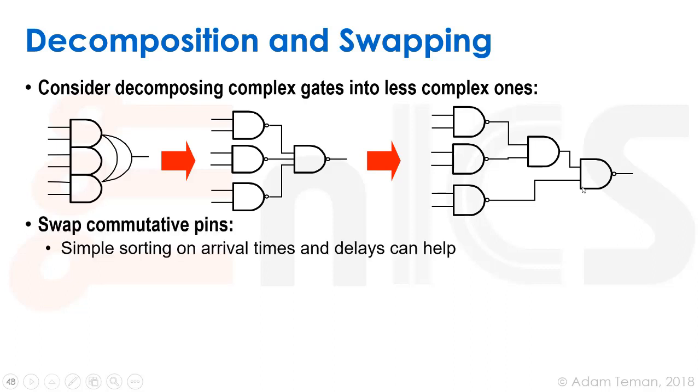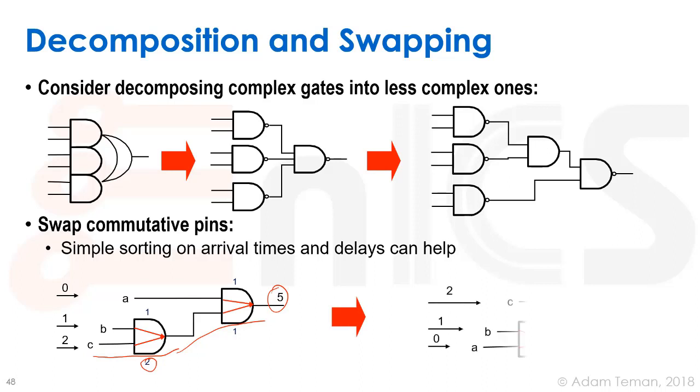Another thing is we can swap commutative pins. This is a simple sorting type of thing and it's based on the fact that not all pin delays are the same and not all paths through the logic are exactly the same. So again we have these arrival times - this signal arrived at time zero and this signal arrived at time two. Our worst path is obviously from the one that arrived at two. It went through this really bad two-delay gate so it arrives over here at four, and another one we arrived in the end at time five.